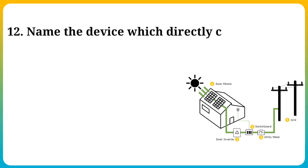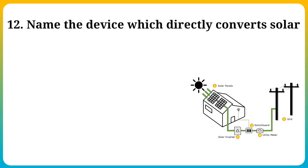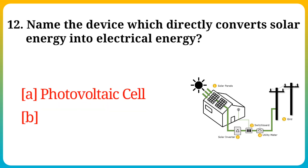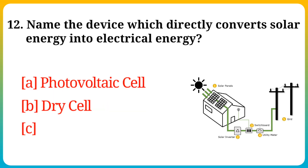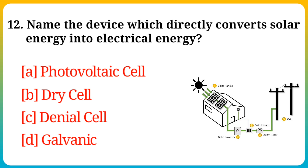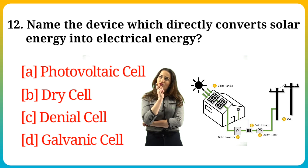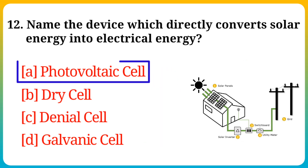Question number 12. Name the device which directly converts solar energy into electrical energy. Option A: Photovoltaic cell, B: Dry cell, C: Daniel cell, D: Galvanic cell. Answer is option A: Photovoltaic cell.